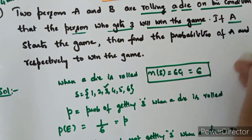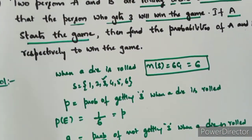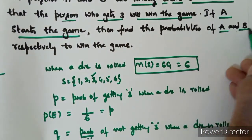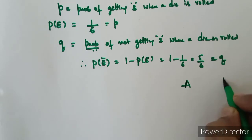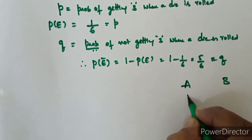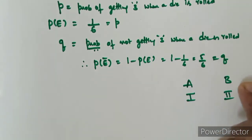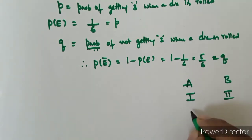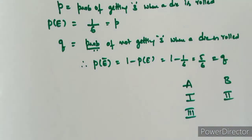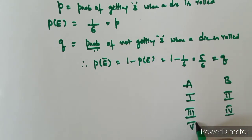If A starts the game, the first chance goes to A. Suppose A fails to get 3, then the second chance goes to B. Suppose B also fails to get 3, the third chance goes to A, fourth chance goes to B, fifth chance to A, sixth chance to B — like that, the game continues.